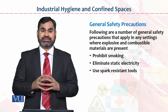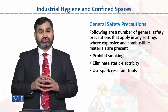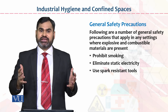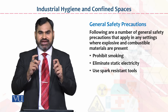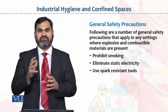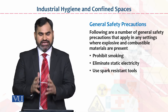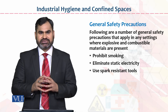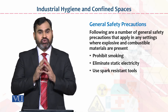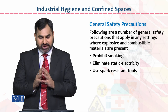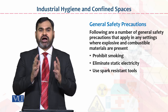Second: eliminate static electricity. Third: use spark resistance tools. Aise tools use na karein jinki spark nikalti ho, electricity ko jalane ka bais ban sakti ho, ya woha pe short circuit uski wajah se ho sakti ho. To yeh chizein kya hain basically dear students? General safety precautions hain un organizations ke liye jahan pe khas tor pe explosive material ka kaam hota hai.